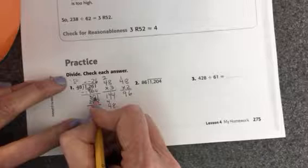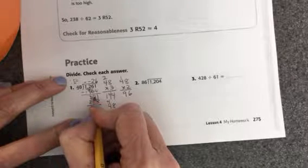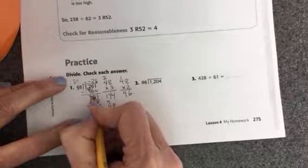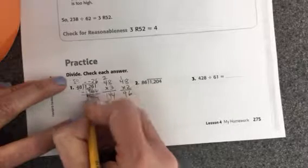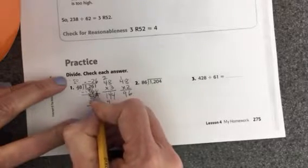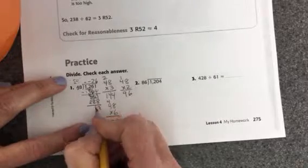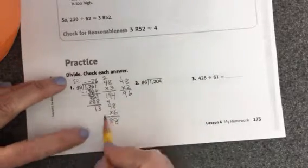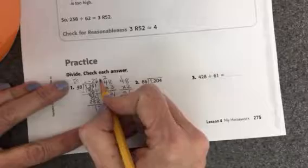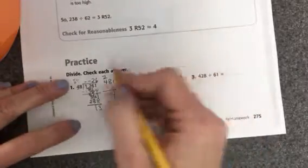I can't do 1 minus 8, so I'm going to need to borrow. I can't borrow from the 0, so I'm going to cross through the 30 and write 29 on top. 11 minus 8 is 3. 9 minus 8 is 1. So I have 13 as a remainder.